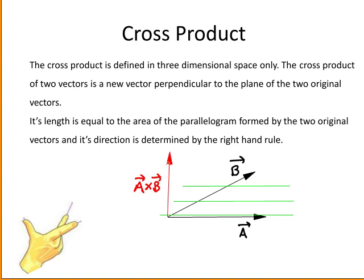The length or magnitude of this vector is given by the area of the parallelogram formed by the two original vectors A and B. That is the area of the parallelogram there. So this area given by the yellow shaded area is equal to the length of the vector A crossed with B.